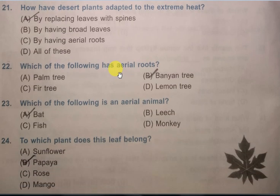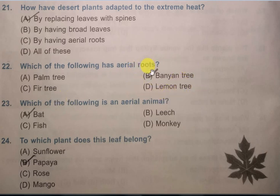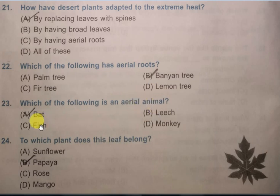Question 22: Which of the following has aerial roots? Options are: palm tree, banyan tree, fir tree, lemon tree. The correct answer is banyan tree — keep that in mind. Question 23: Which of the following is an aerial animal? Options are: bat, leech, fish, monkey. The aerial animal is bat, so the correct answer is bat.